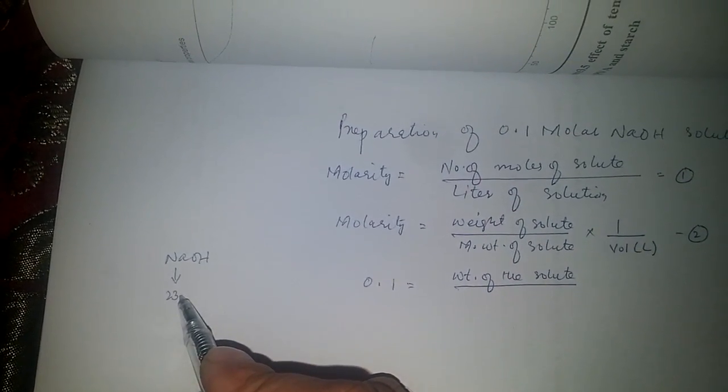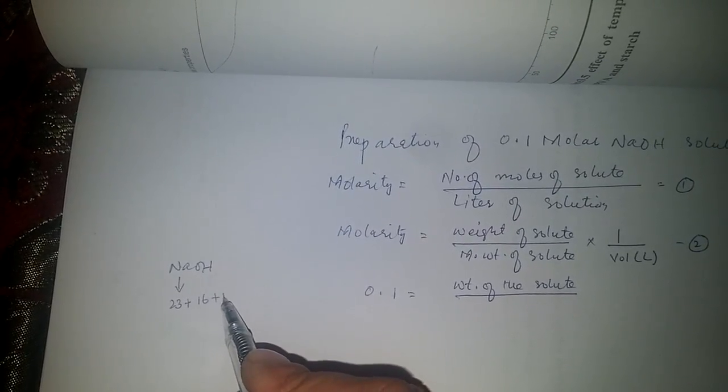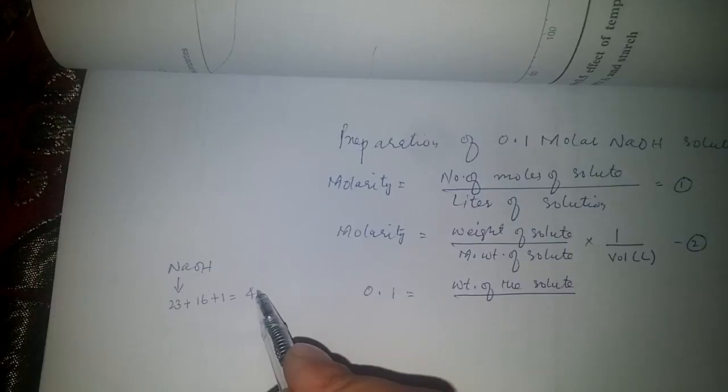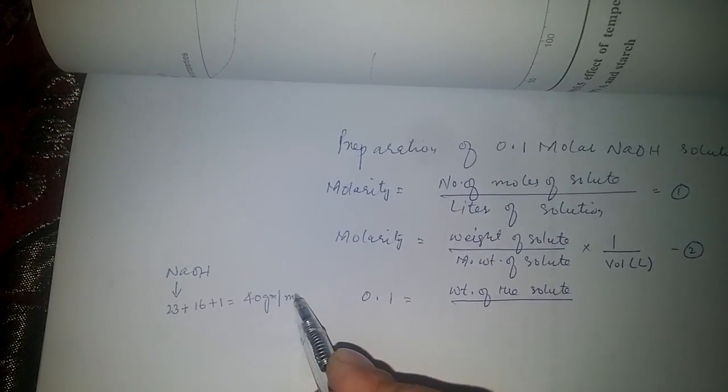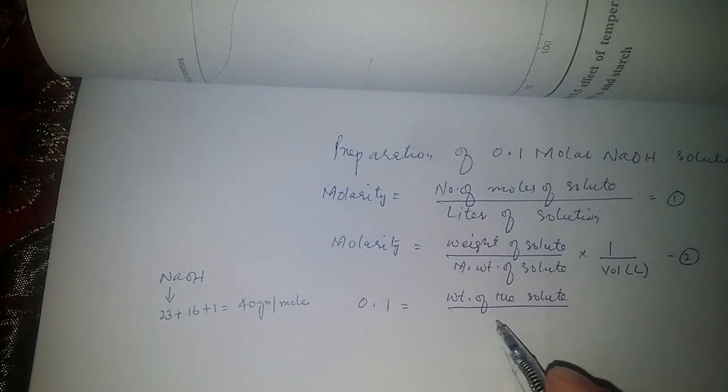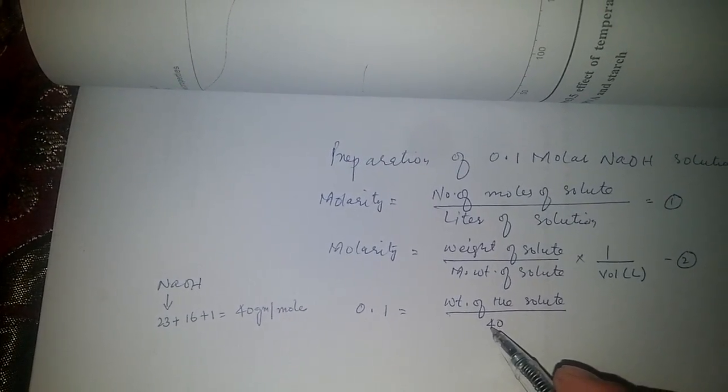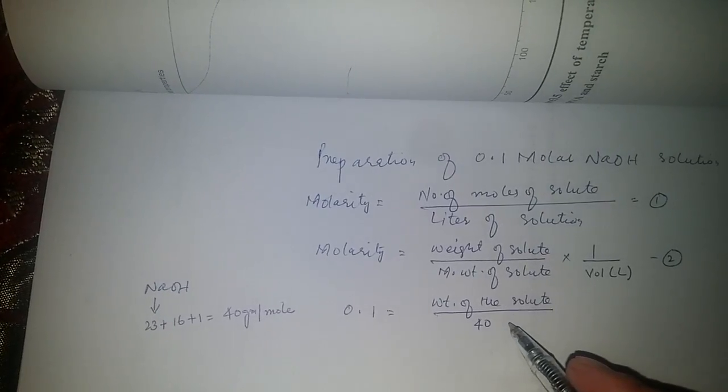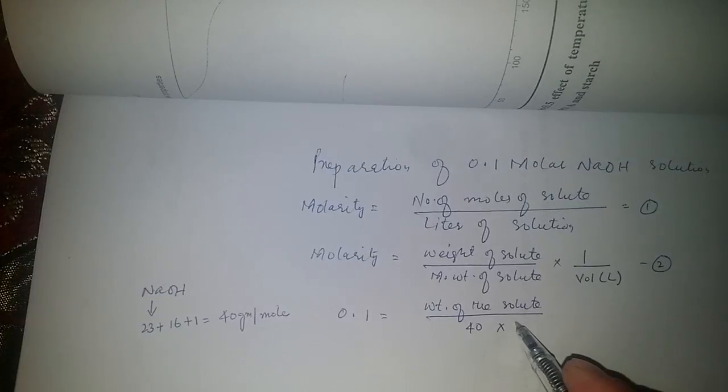So it comes out to be 40 grams per mole. We can plug in this value of NaOH molecular weight. Volume is one liter, so we would place one.